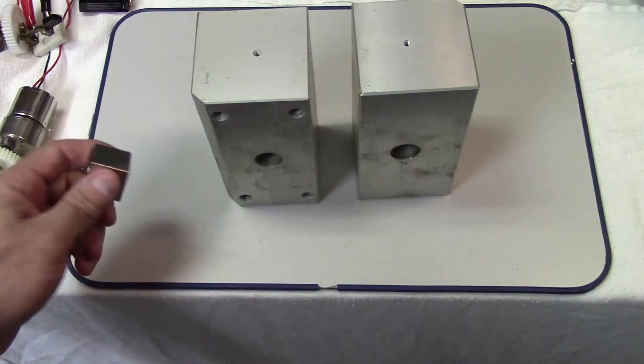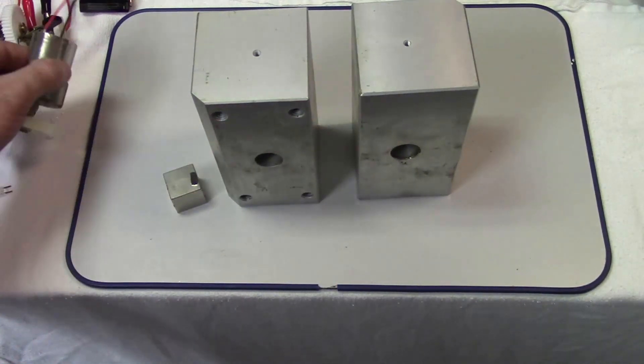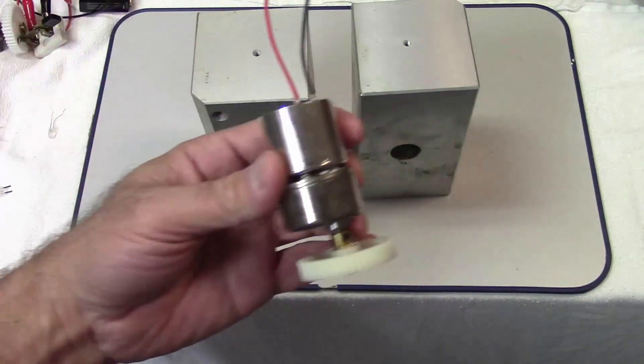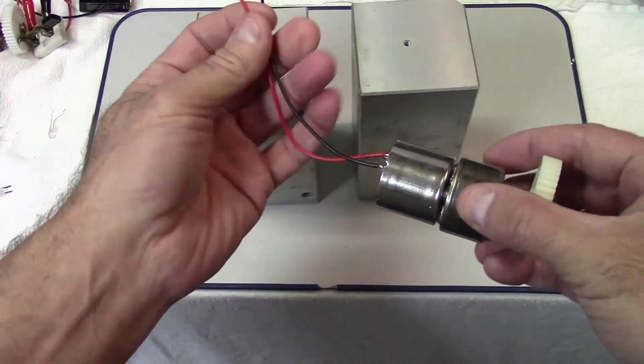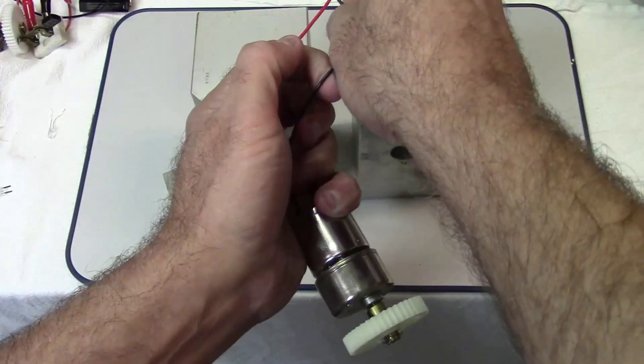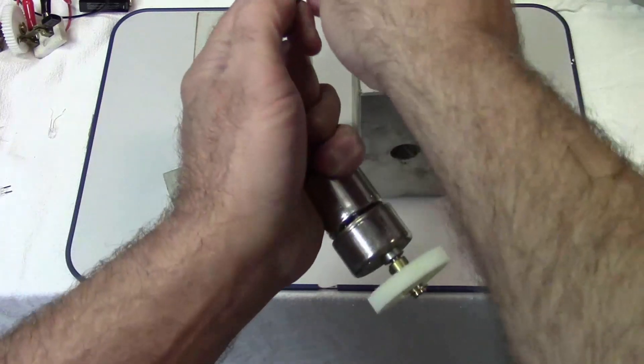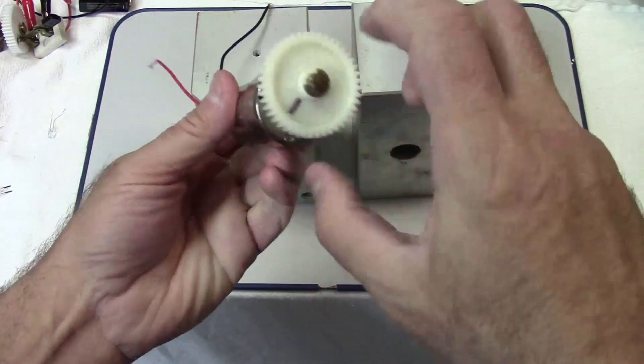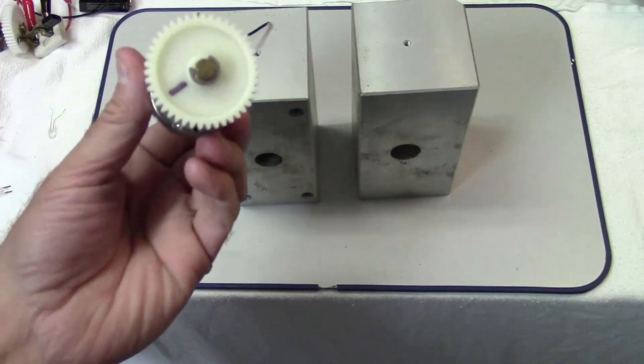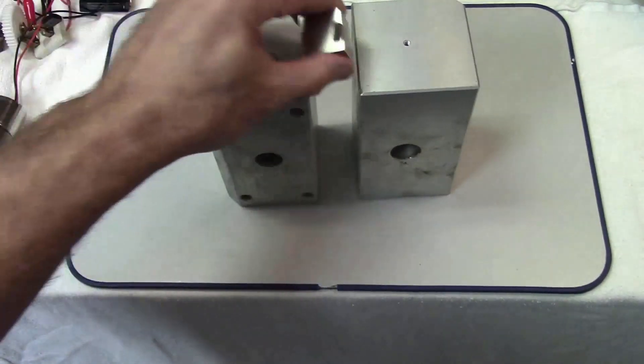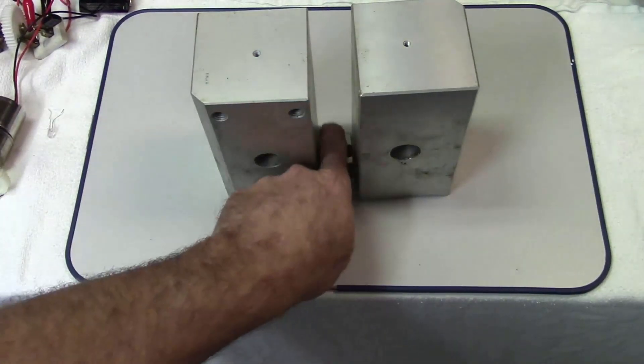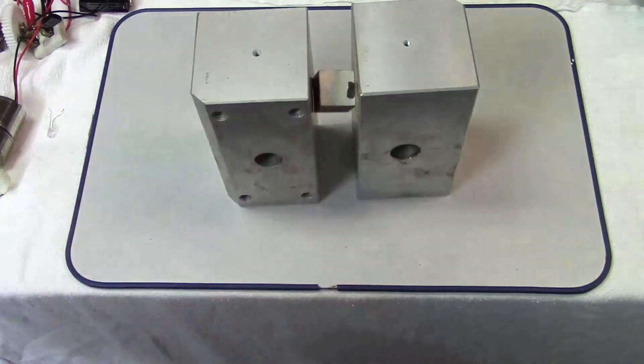And this is the same thing that's going on inside the dynamic braking in a motor like this. So if I touch the terminals together, I can stop the motor quickly, just like the magnet is slowed down by these two aluminum blocks.